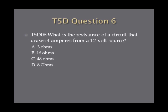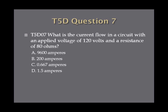Question 6: What is the resistance of a circuit that draws 4 amperes from a 12 volt source? A. 3 ohms. Question 7: What is the current flow in a circuit with an applied voltage of 120 volts and a resistance of 80 ohms? A. 9,600 amperes. B. 200 amperes. C. 0.667 amperes. Or D. 1.5 amperes.